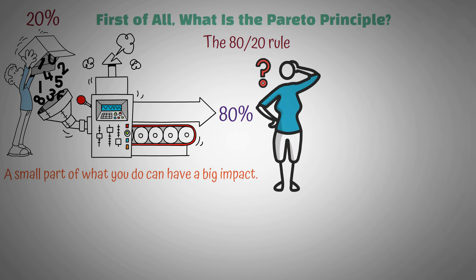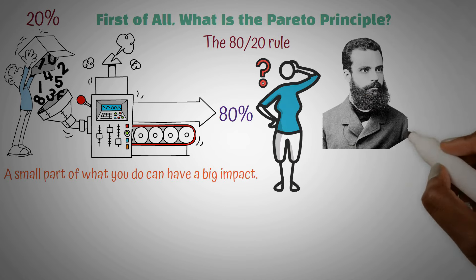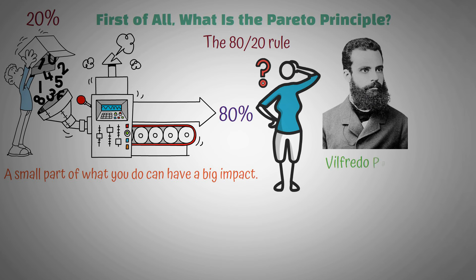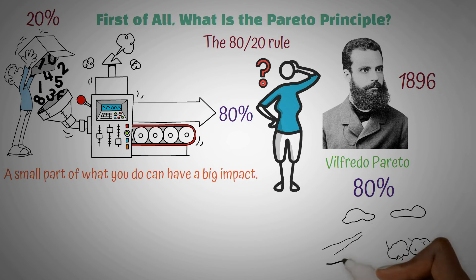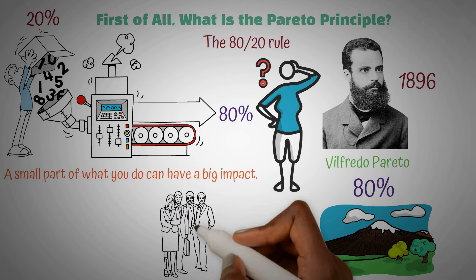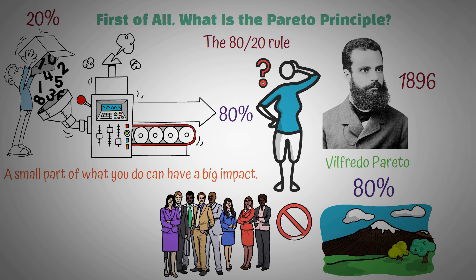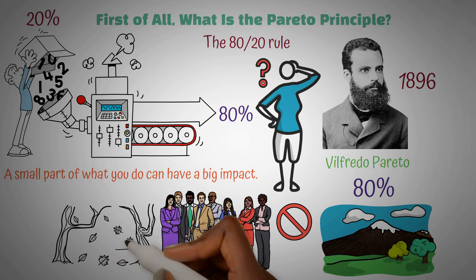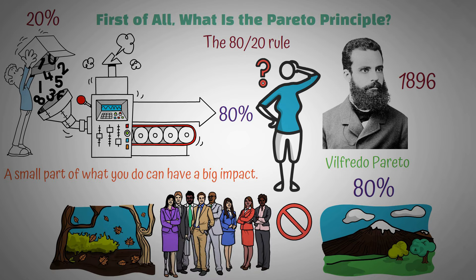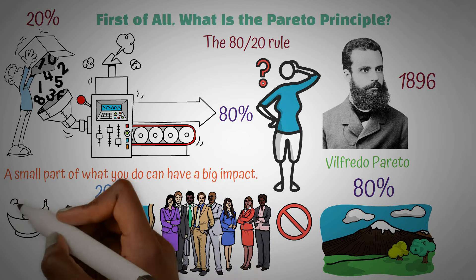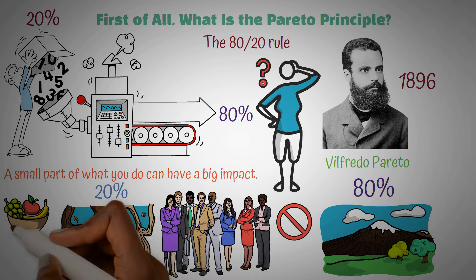Where did it come from? The idea of the Pareto Principle came from an Italian economist named Vilfredo Pareto back in 1896. He noticed something interesting in Italy — about 80% of the land was owned by just 20% of the people. But it wasn't just about land. Pareto saw the same pattern in his garden: only 20% of his plants were producing 80% of the fruit.